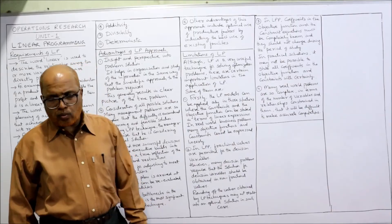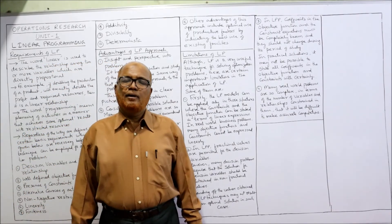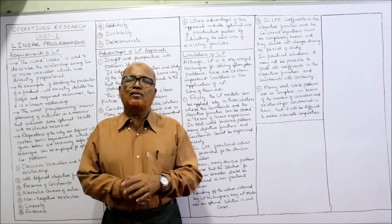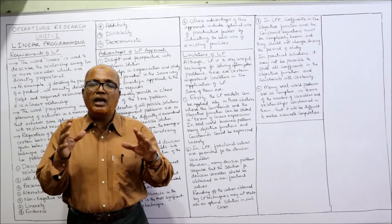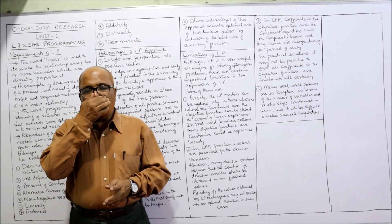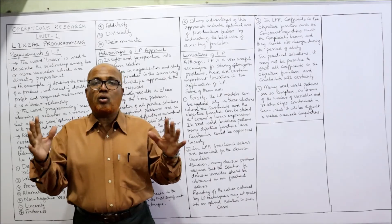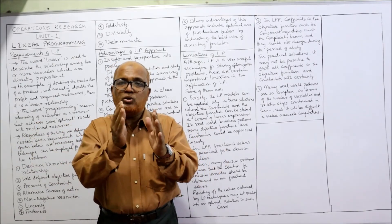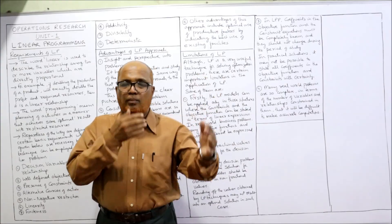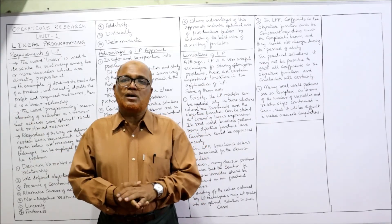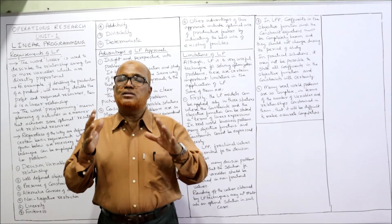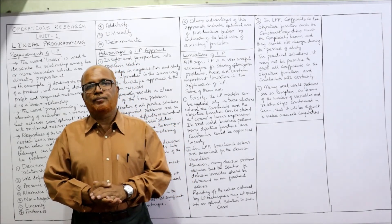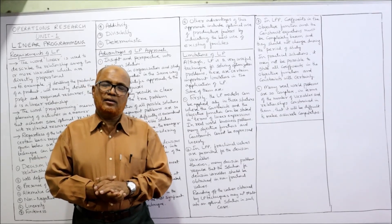The fourth limitation is complexity. Many real-world problems are so complex in terms of number of variables and constraint relationships that accurate computations become difficult. While LP works well with two or three variables and constraints, real business problems are much more complicated, with many variables, inter-relationships, and multiple objectives. In such a complex environment, linear programming may not give an optimum solution.